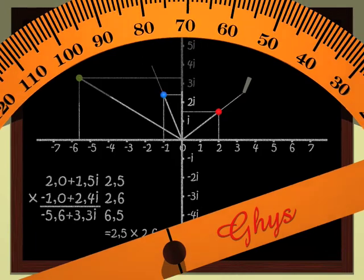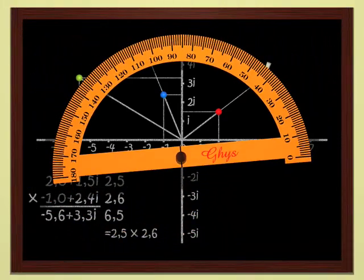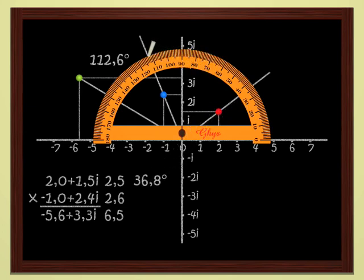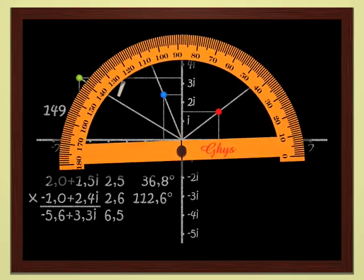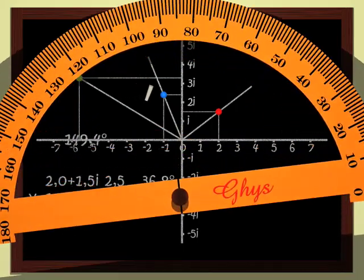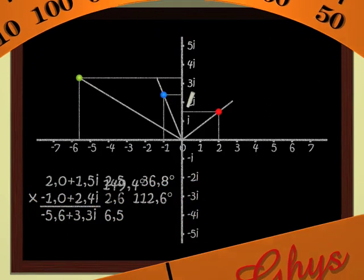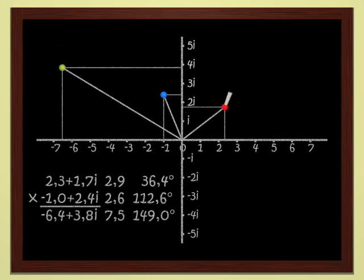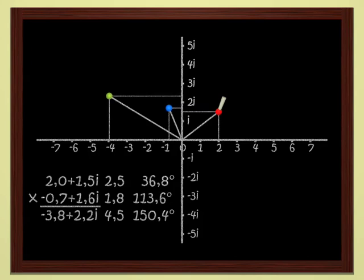The argument of a complex number is measured by the angle between the abscissa axis and the straight line joining the origin to the point. Here, for instance, the argument of the red complex number is 36.8 degrees. The argument of the blue point is 112.6 degrees. And for the product, the green point, we get 149.4 degrees — that is, the sum of the arguments of the two numbers. When we multiply two complex numbers, moduli are multiplied and arguments are added.